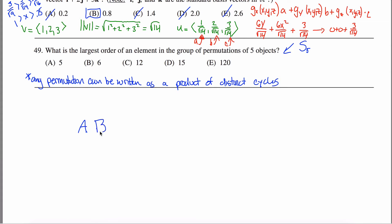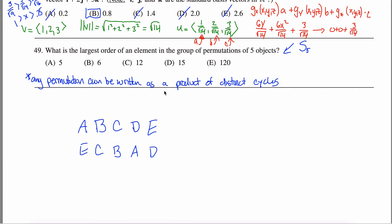We have five objects — call them A, B, C, D, and E — and we're going to permute them. For example, maybe A goes to E, B goes to C, C goes back to B, D goes to A, and E goes to D. This is a perfectly good permutation, and I can express it as a product of distinct cycles.